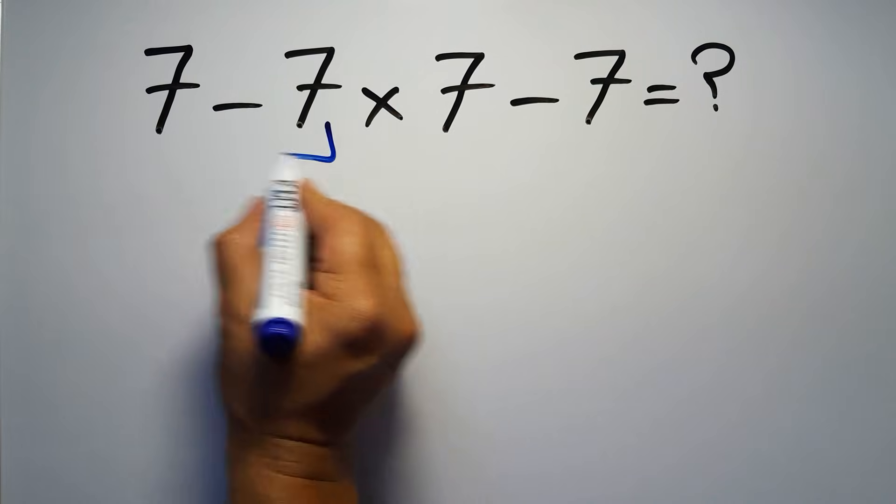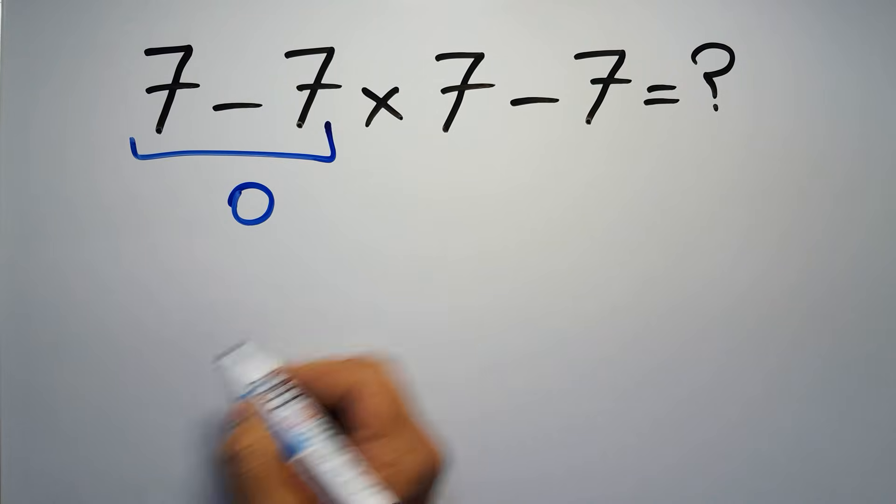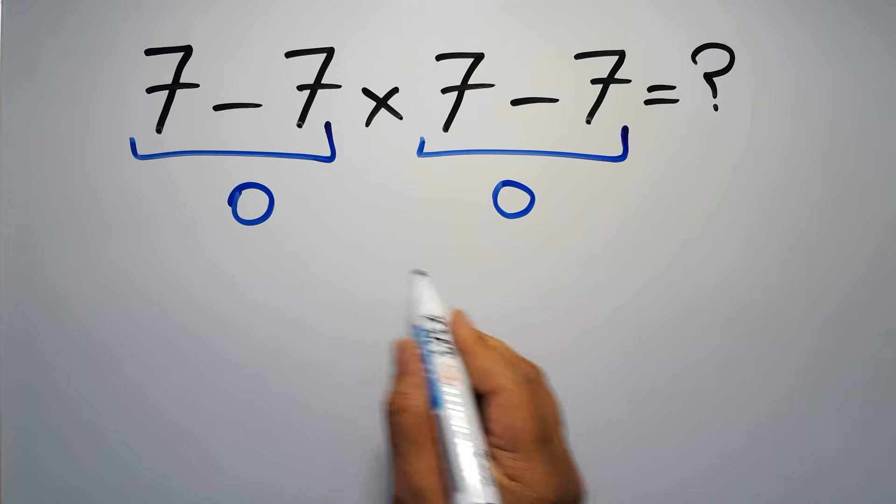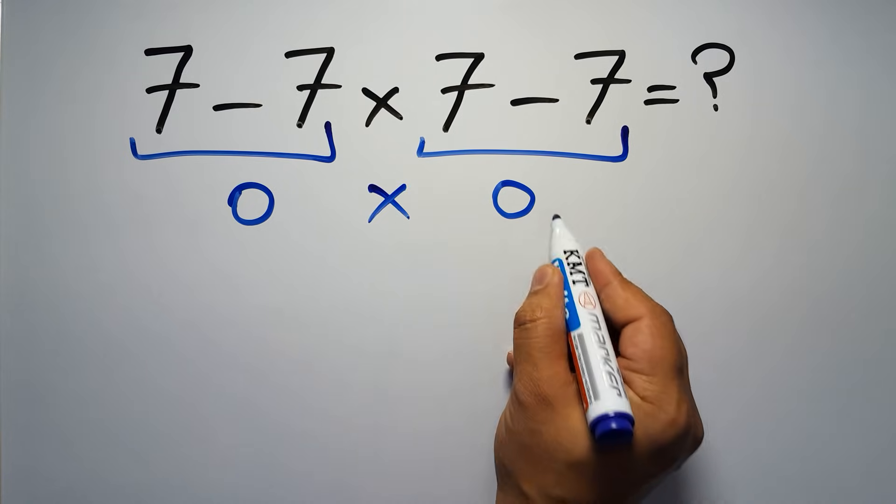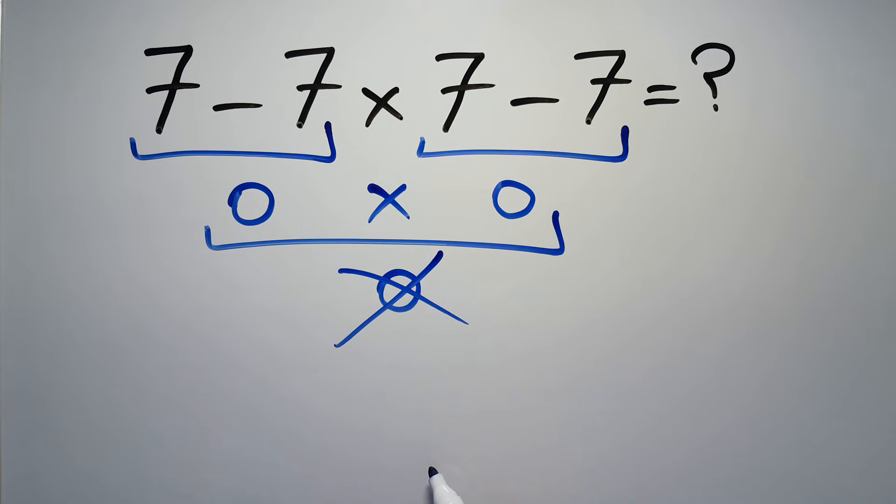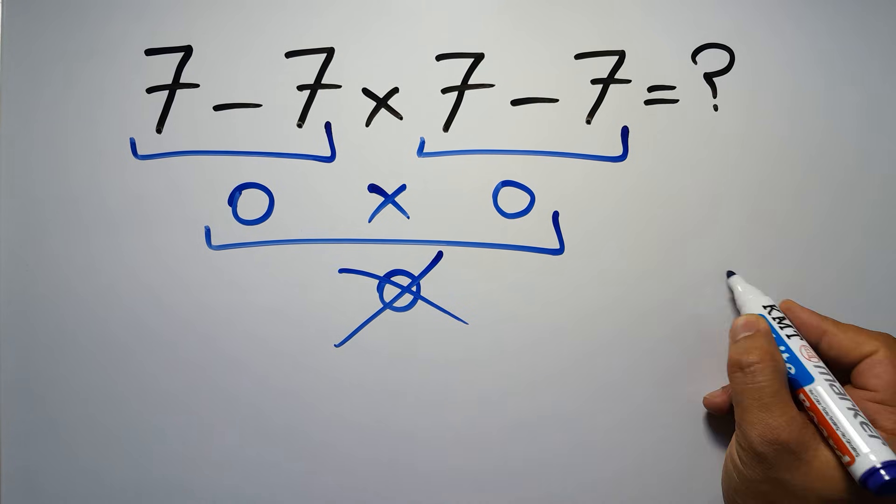7 minus 7 gives us 0, and again here we have 7 minus 7. So 0 times 0 is just 0. But this answer is not correct because according to the rule of operations, first we have to do parentheses, then exponents, then multiplication or division, and finally addition or subtraction.